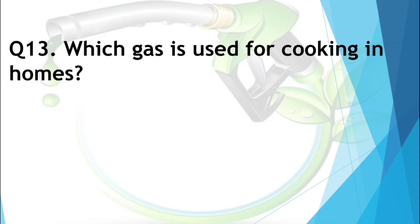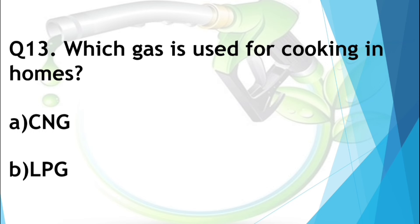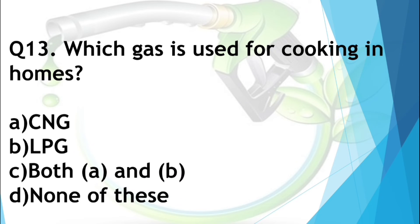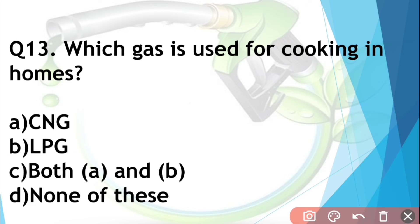Question number thirteen: Which gas is used for cooking in homes? Options are CNG, LPG, both A and B, or none of these. Option 'both A and B' suggests we use both CNG and LPG for cooking — but no, we only use LPG for cooking. So B is the answer — LPG.